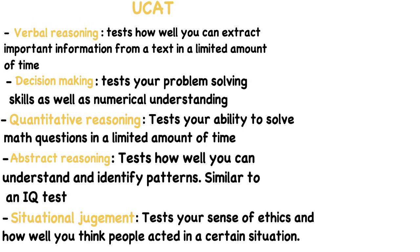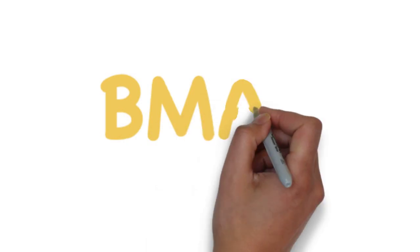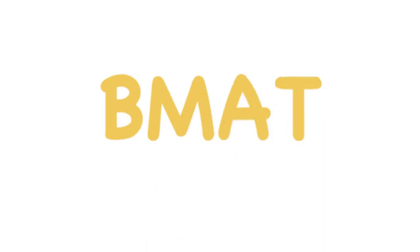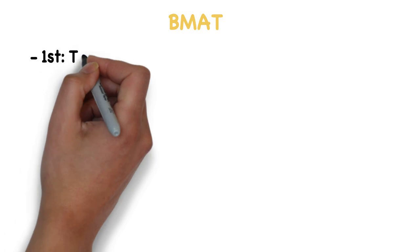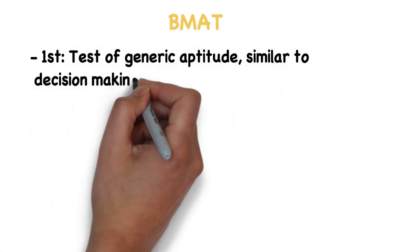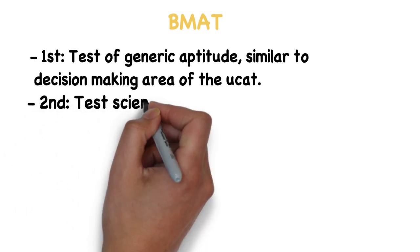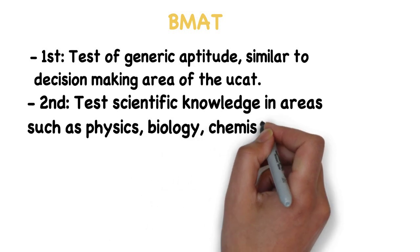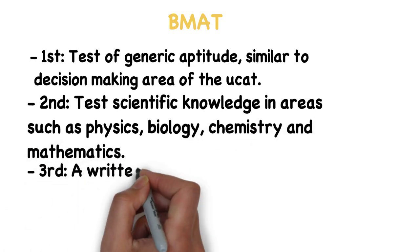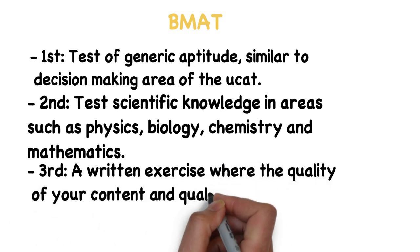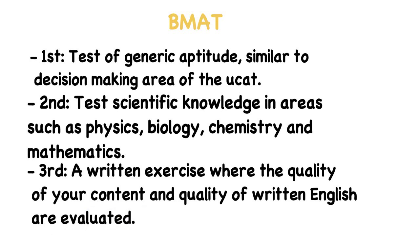The main challenge of the UCAT is not the questions themselves, it's actually the time you have to answer them, which is very short. On the other hand, the BMAT tests scientific knowledge, as well as mathematics and some problem-solving skills. The test can be divided into three areas. The first one tests generic aptitudes, similar to decision making in the UCAT. The second tests scientific knowledge in areas such as physics, biology, chemistry, and even some mathematics. And the third area is a written exercise where the quality and content of your written exam is tested. Personally, I found the UCAT the hardest part of the application process. So, there will be more videos later on focused specifically on the UCAT and giving tips and tricks and explaining the test better.